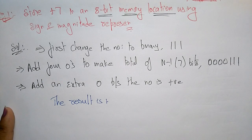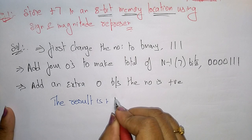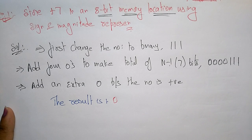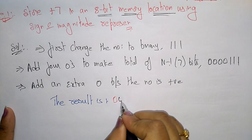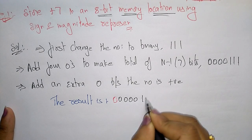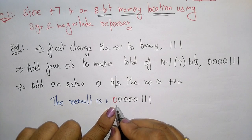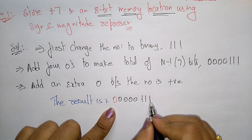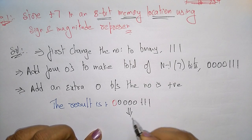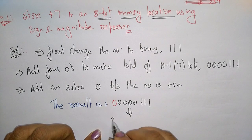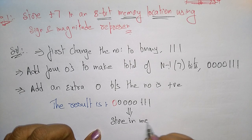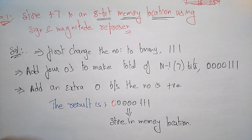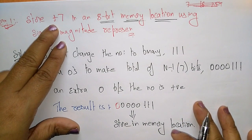After adding the extra 0, the complete 8-bit result is 0 0 0 0 0 1 1 1 — that is 8 bits total. This 8-bit data is now stored in the memory location. That is how +7 is stored using sign and magnitude representation.